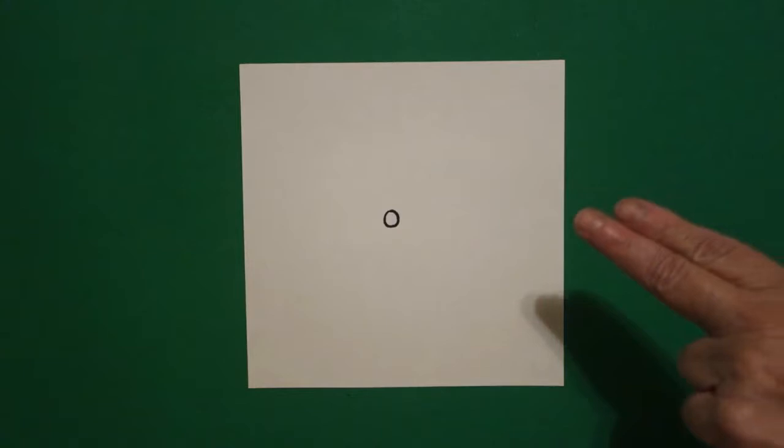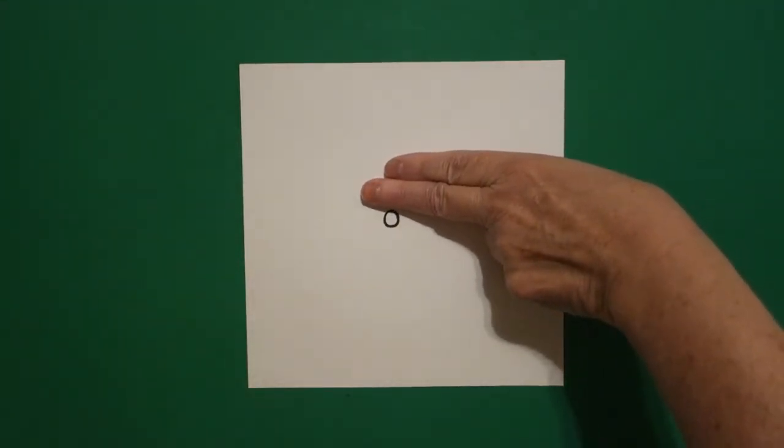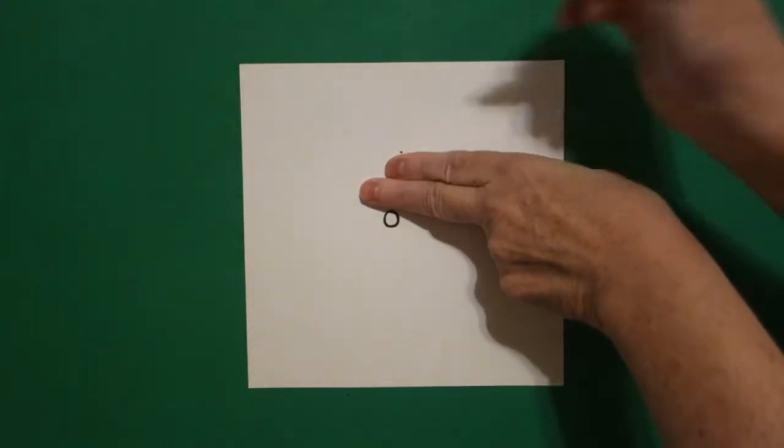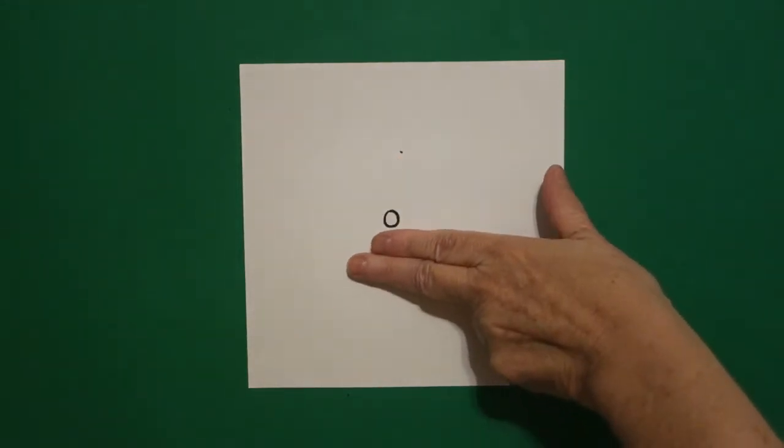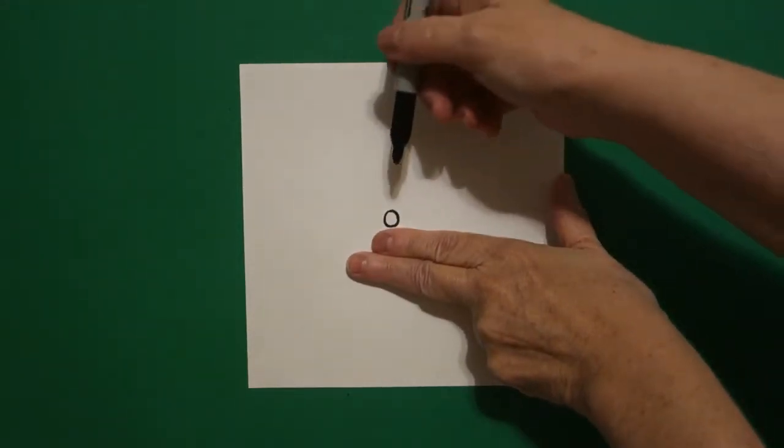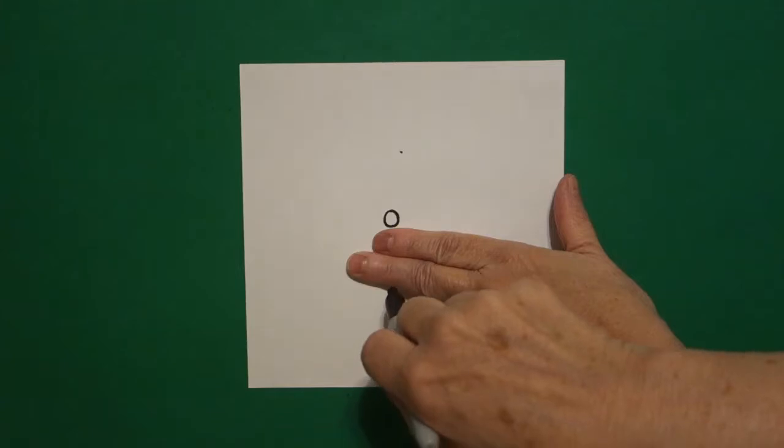I take two fingers right at the top of the circle, right above and I put a dot. And I take two fingers right below and I put another dot.